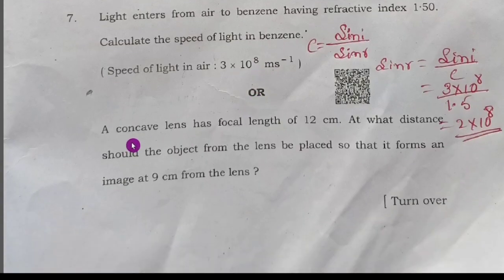Next, third option: the concave lens has a focal length of 12 centimeter. At what distance should the object from the lens be placed so that it forms an image at 9 centimeter from the lens?